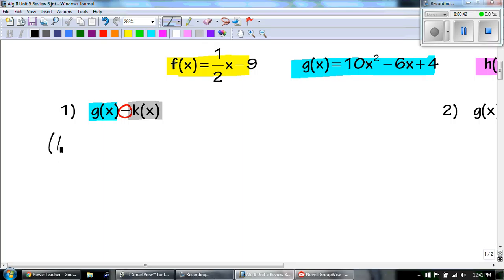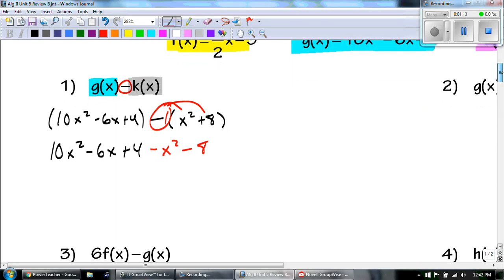We've got four gorgeous functions. Now we just have to look at each one to see what they're asking us to do. Number 1 tells me to start with g of x, and then we are going to subtract k of x. So I'm going to write g of x down, which is 10x squared minus 6x plus 4, and I'm going to subtract that with whatever k of x is, which is the x squared plus 8.